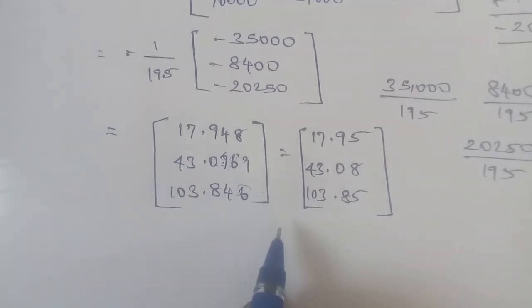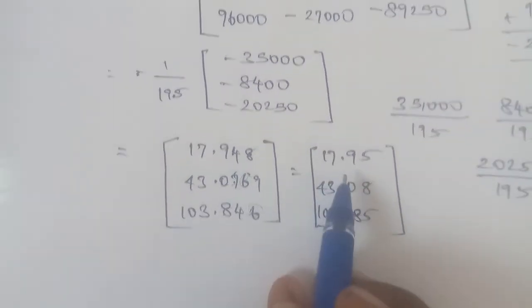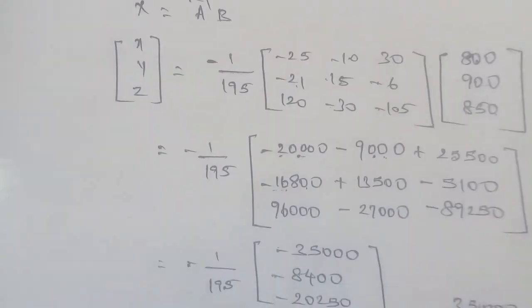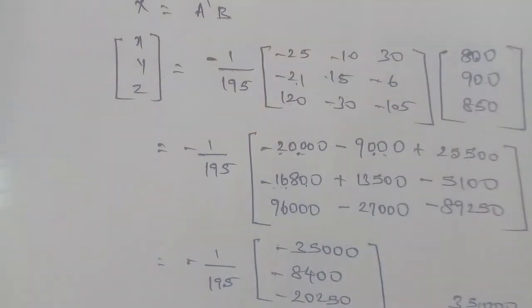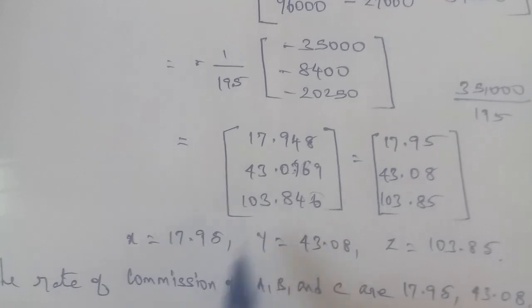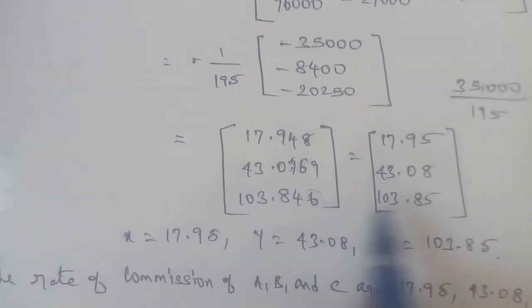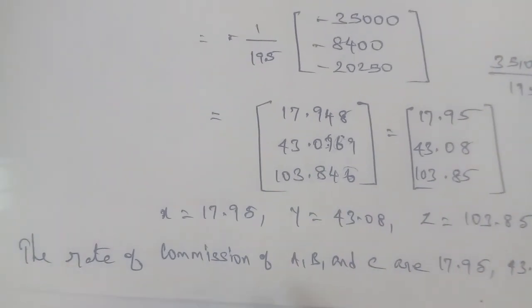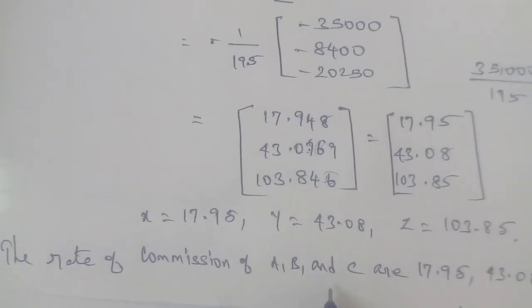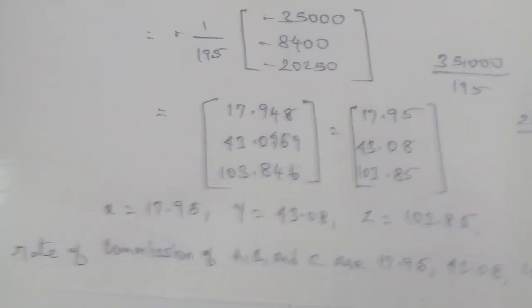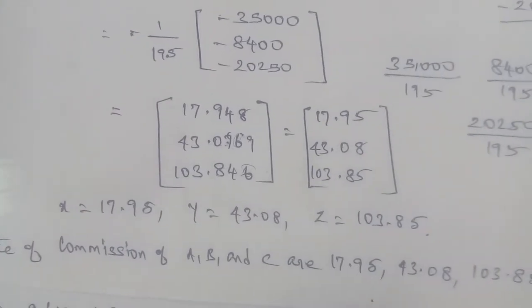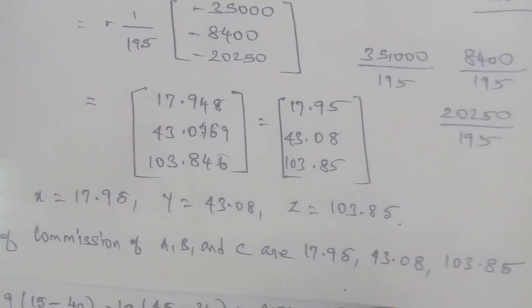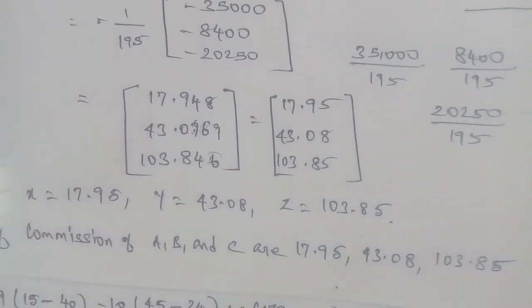So the final answers for x, y, and z represent the rate of commission for products A, B, and C respectively. x is the rate of commission for A, y is the rate of commission for B, and z is the rate of commission for C. These are the commission rates per unit sold for the three products.